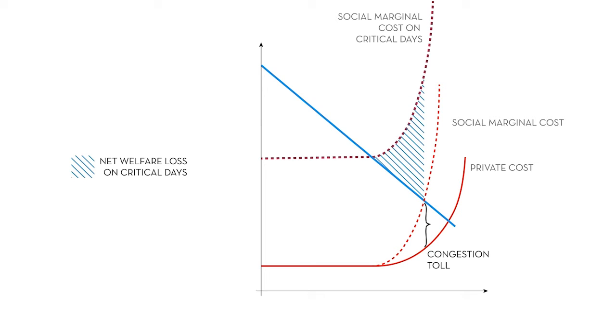However, to fully internalize the full marginal social cost during these extreme days, an additional pollution toll must be added. If that's done, we have the optimal solution.